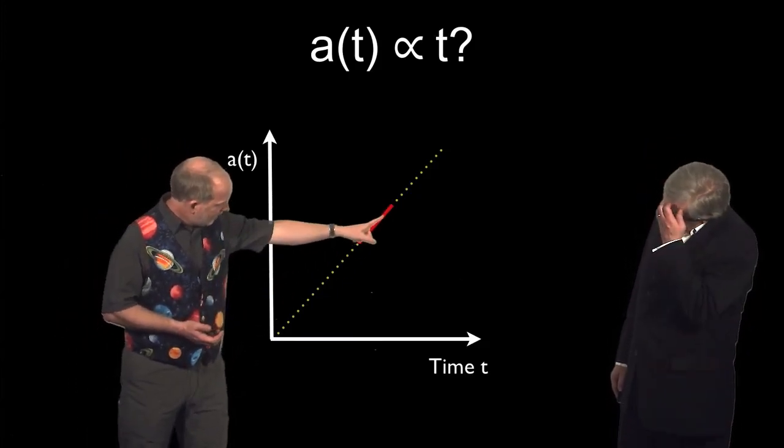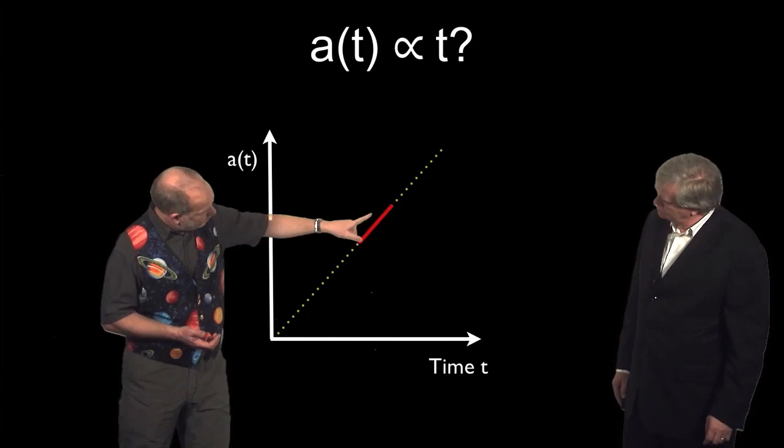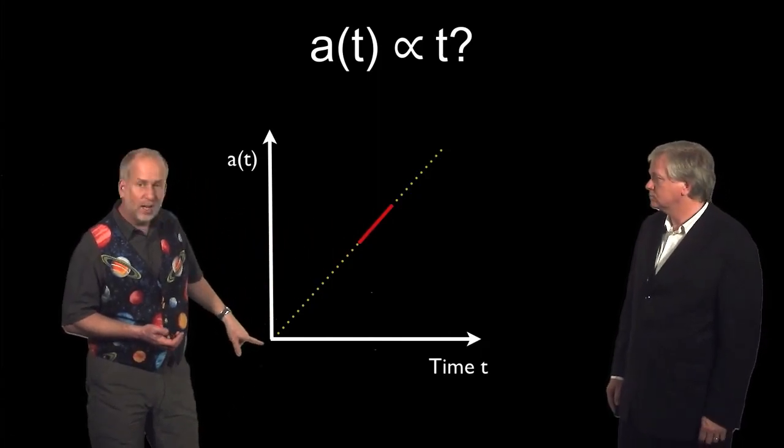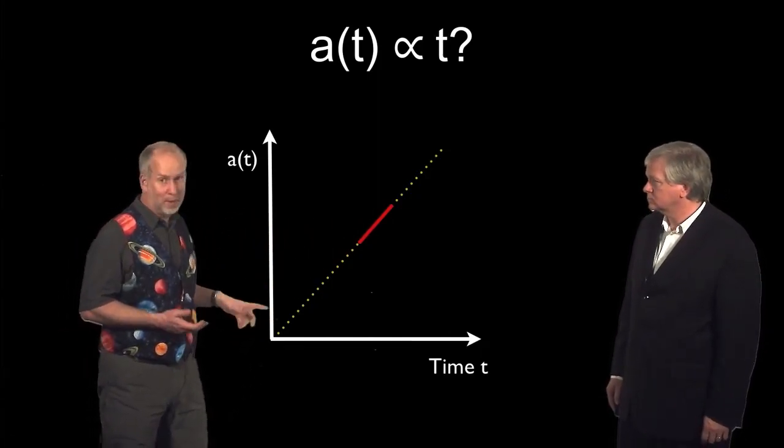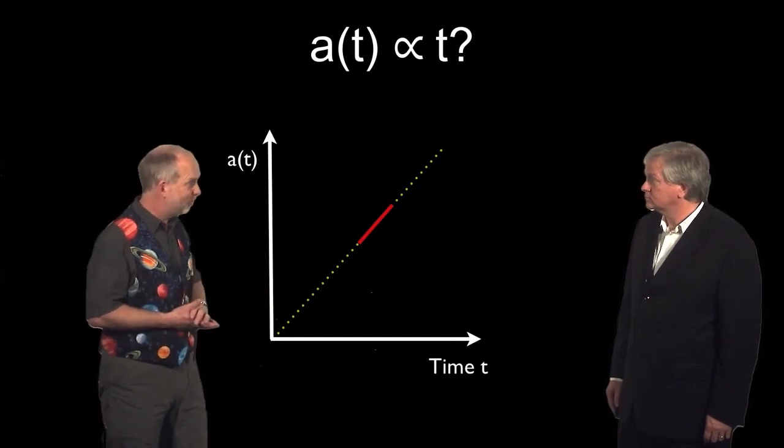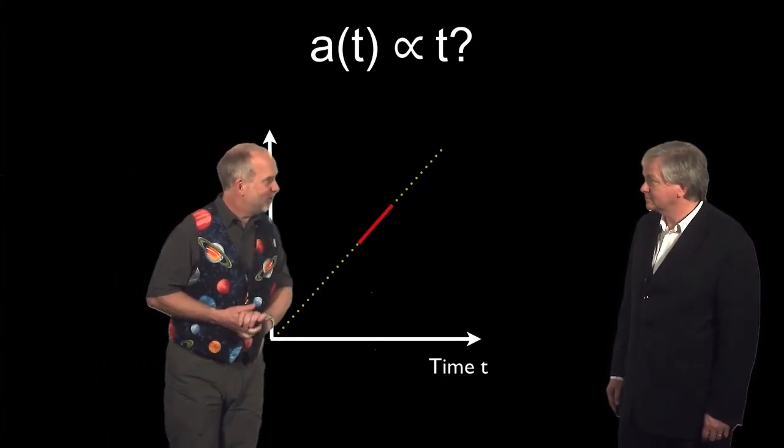If this is the case, then we could look at the current expansion rate of the universe and extrapolate back to find out when the universe was formed. That would be a pretty neat thing to know, the origin of the universe. Something that philosophers have been debating for centuries.